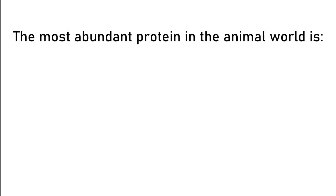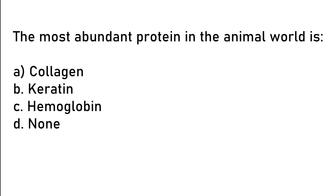The most abundant protein in the animal world is? Collagen, keratin, hemoglobin, none. So the correct answer is option A. Collagen is the most abundant protein in the animal world.